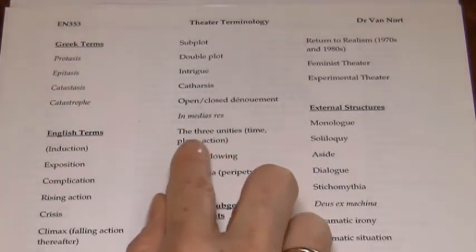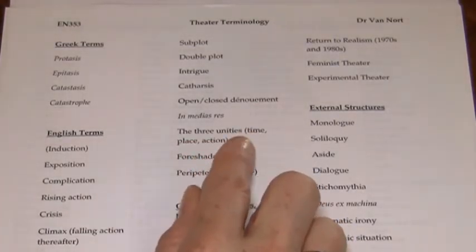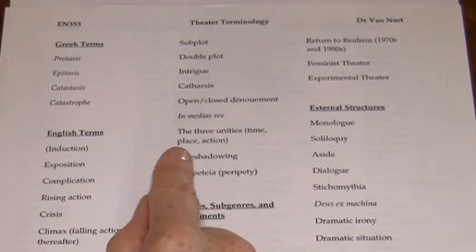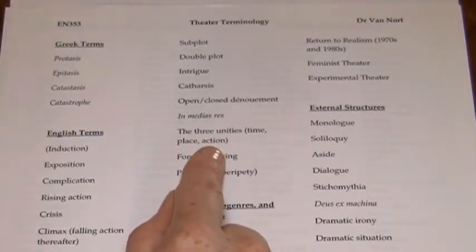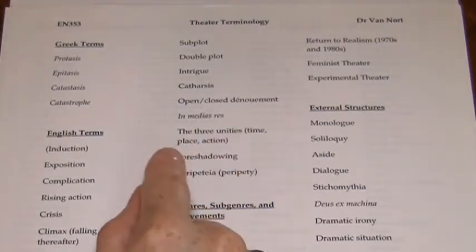The three unities — you'll need to know these: time, place, and action. Time and place are given by Aristotle, and action is what is assumed by these two.